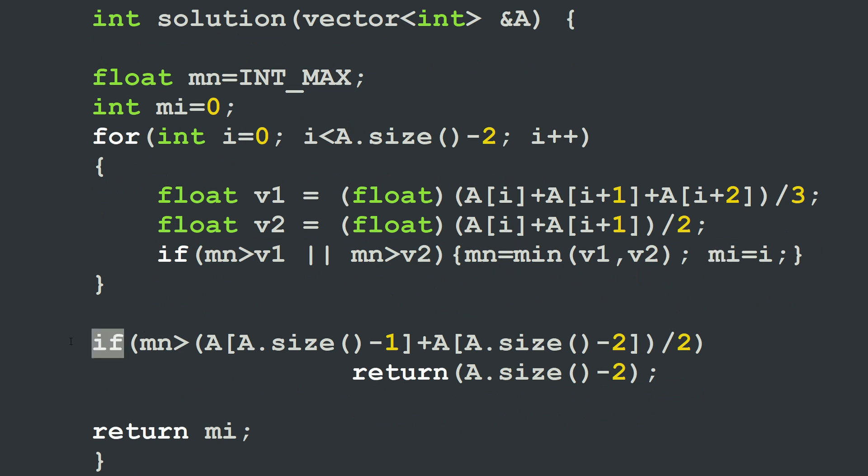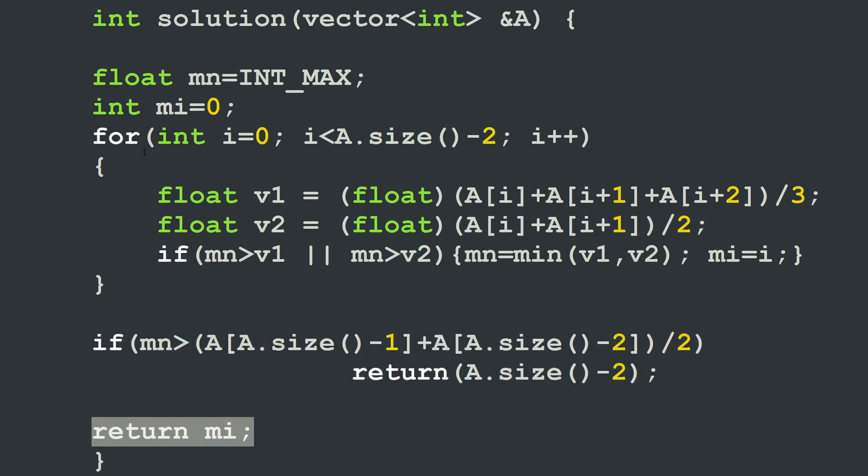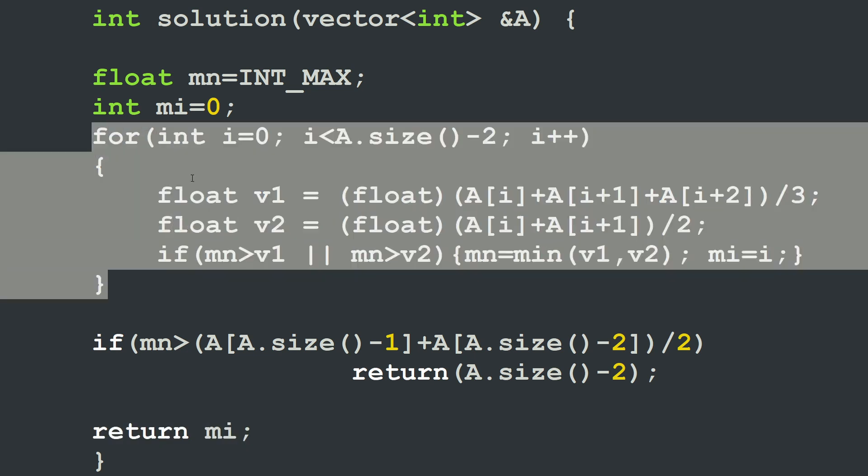Then the edge case, the last slice of two elements, needs to be tested also. So if the minimum value is higher than this average, a with index a.size minus one, meaning the last element, plus before the last element divided by two, then in this case we have a new minimum average. And we have to return the index a.size minus two. So it's the index of before the last element of the array. If this condition is not true, then we simply return the index that we have found while roaming our array in the for loop.